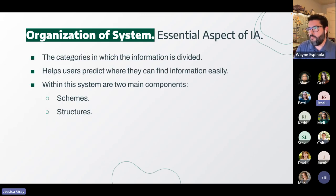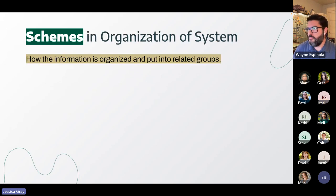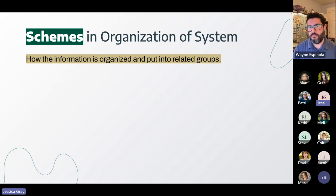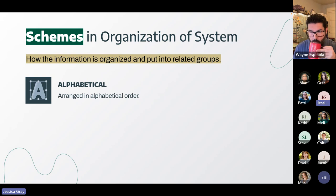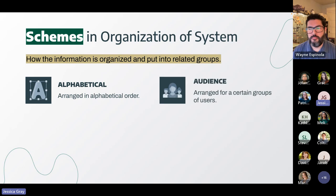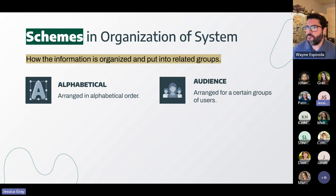The organization system is the distribution of information within identifiable categories so they're easier to find. Within the system are two main components: structures and schemes. Schemes are how information is arranged and put into related groups. Popular schemes include alphabetical — self-explanatory, content arranged in alphabetical order, which works best when the user already knows what they're looking for. Then there's audience — content arranged for a certain group of users. An example would be an educational resource separating content by skill level: beginner, intermediate, expert, and so on.